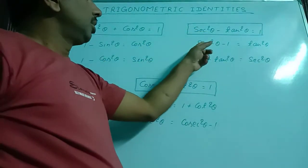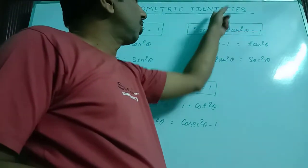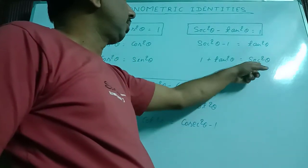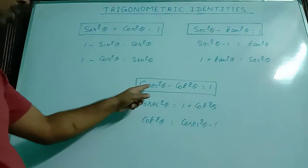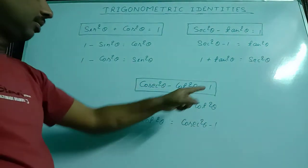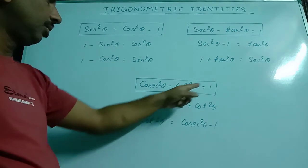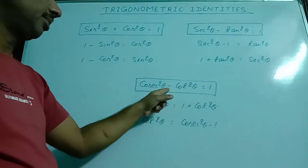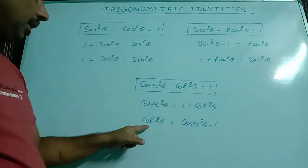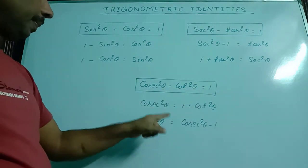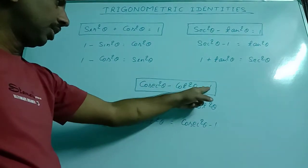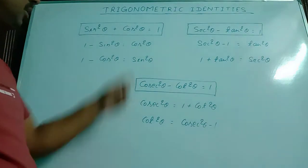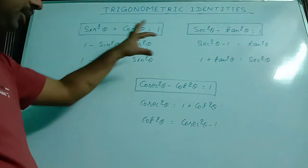From the second identity: sec square theta minus 1 equal to tan square theta, and 1 plus tan square theta equal to sec square theta. From the third identity: cosec square theta minus cot square theta equal to 1, so cosec square theta equal to 1 plus cot square theta. This cot square theta will go to the other side — since it was minus, after transposing it becomes plus. And cot square theta equal to cosec square theta minus 1. So there are three main formulas and from each, there are two derivations.